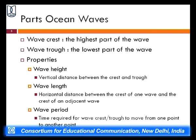The wind blowing over the ocean surface creates ripples or waves of different intensities and heights. Generally, waves can be classified into two parts: the crest, which is the highest part of the wave found above the general sea level, and the trough, which is the lowest part of the wave where the water surface goes below the general level of the sea surface. The properties of a wave include wave height, wave length, and wave period.